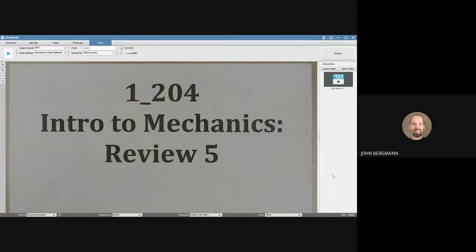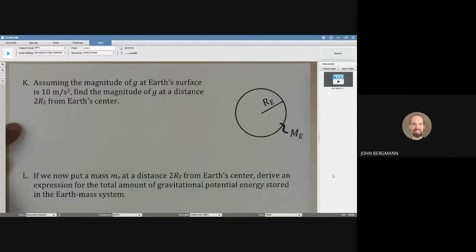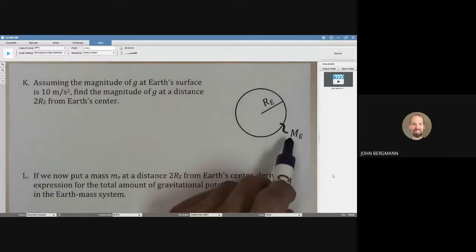This is Intro to Mechanics Review 5. On the right, we have a model of the Earth with a certain radius and a certain mass.